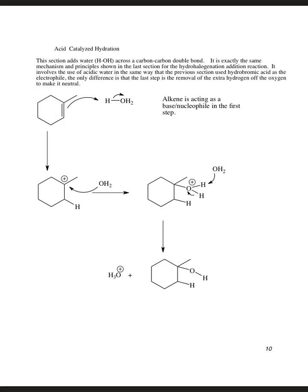If we have an acid-catalyzed hydration, it's one step longer. The pi bond attacks the hydrogen — the less electronegative atom in solution — kicking out water as a leaving group. Water then adds to the cation to form a protonated alcohol. Then another water molecule comes in and removes the extra hydrogen to give us our alcohol in the end. So there's an extra step in this mechanism because water is our nucleophile: it's neutral, so once it adds in, it carries a positive charge on the oxygen, and we have to remove an extra hydrogen to get the neutral alcohol.